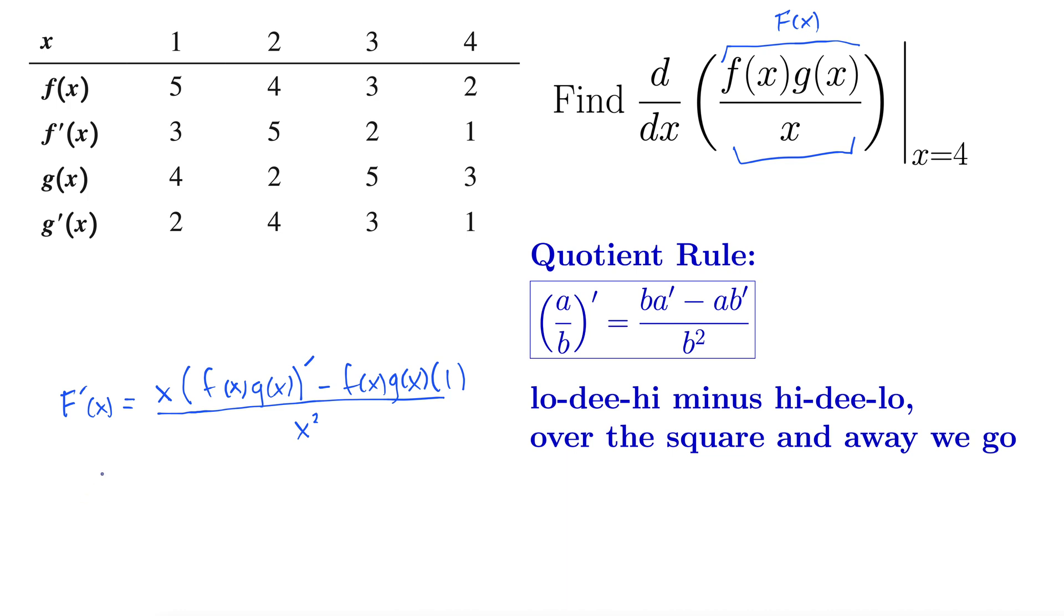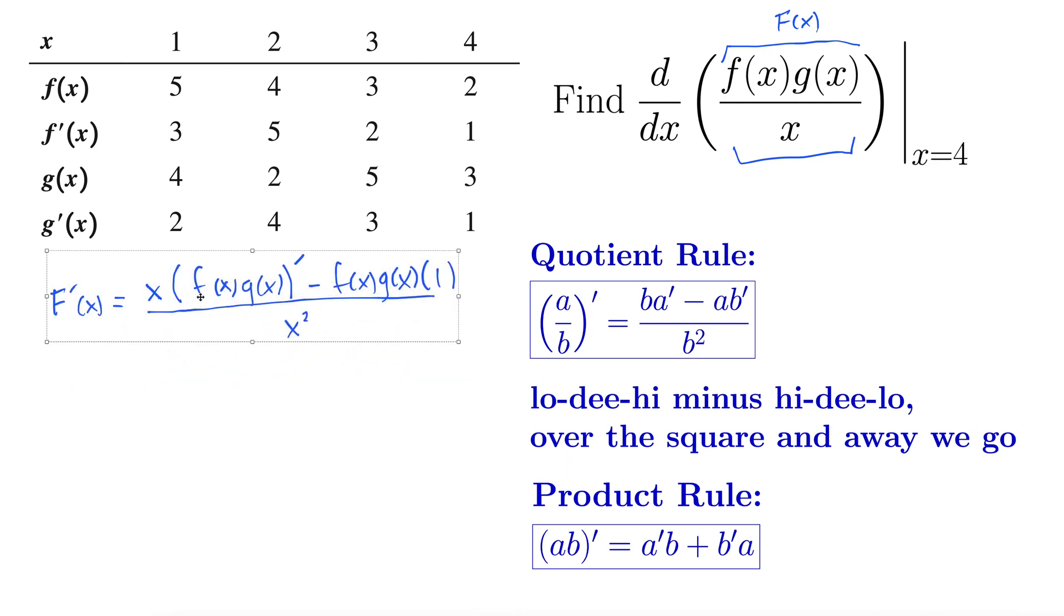Okay well now we need the product rule on f of x times g of x. There's our product rule a b prime equals a prime b plus b prime a. Okay just so we have enough room I'm going to move this up a little bit. I don't want to have to scroll down so then I'll lose my table.